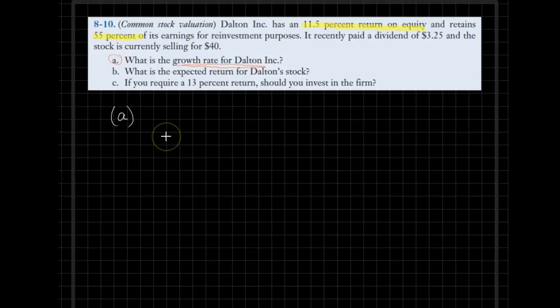The growth rate of the dividends for this common stock—the formula, as you would recall, is that growth rate equals ROE times the retention rate. So in this particular case, the return on equity is 11.5%, and we multiply it with the 55% retention rate.